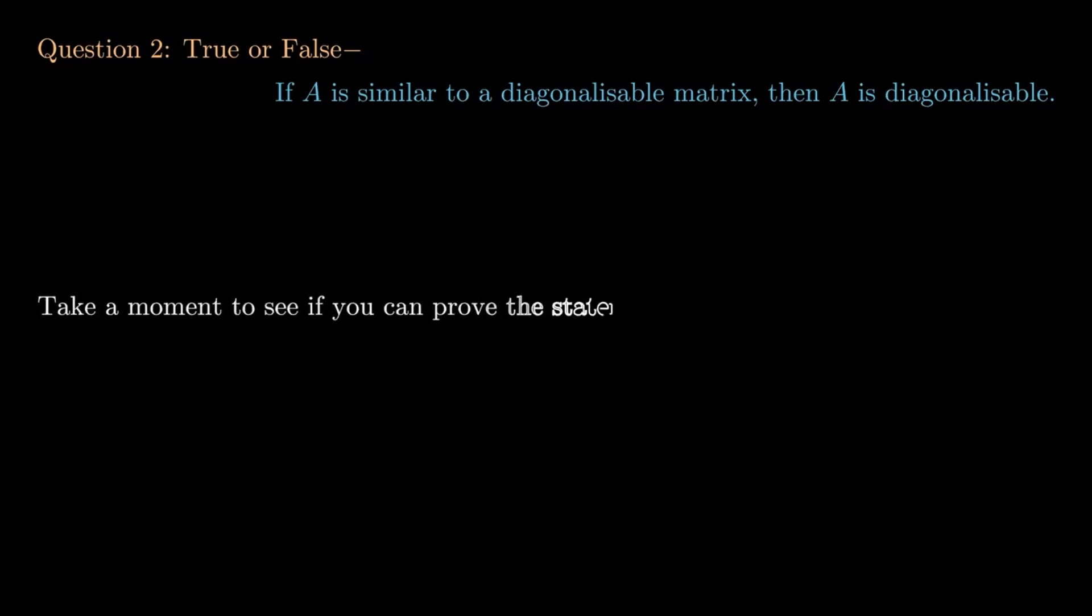Let's look at our second true or false question: If A is similar to a diagonalizable matrix, then A is diagonalizable. Take a moment to see if you can prove the statement on your own or find a counterexample.